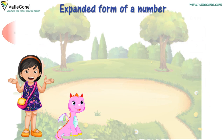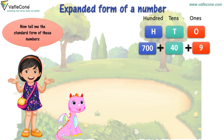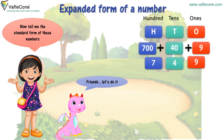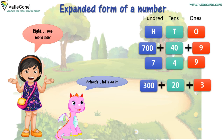Now tell me the standard form of these numbers. 700 plus 40 plus 9. Friends, let's do it: 700 plus 40 plus 9. Yes. One more now. 300 plus 20 plus 3.